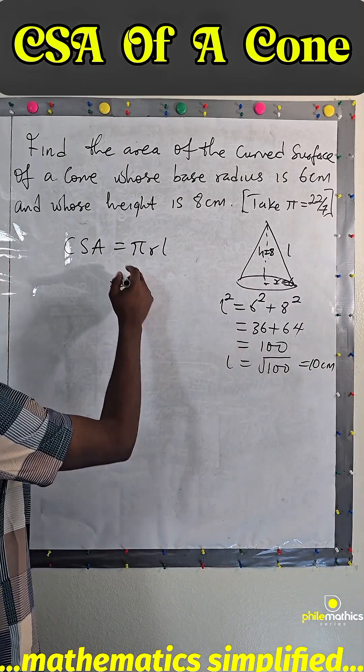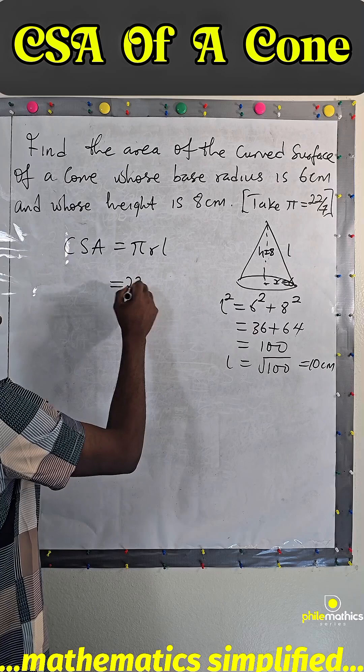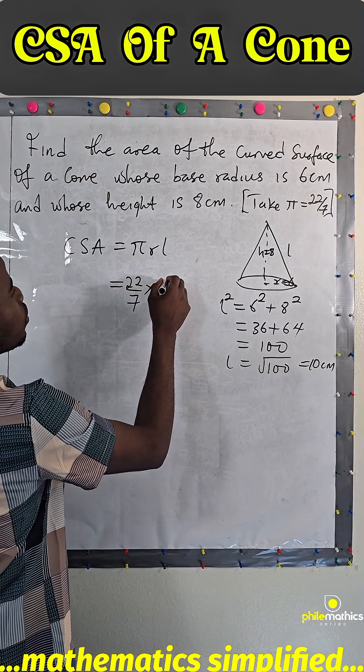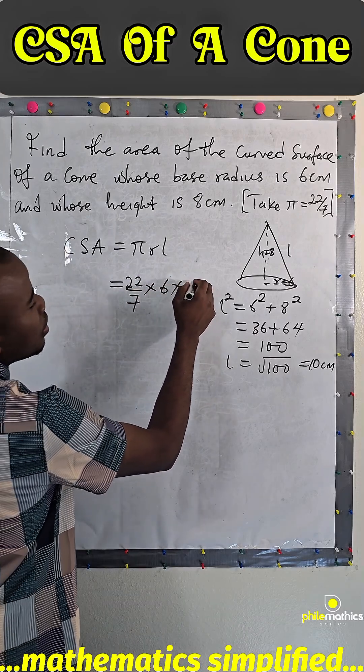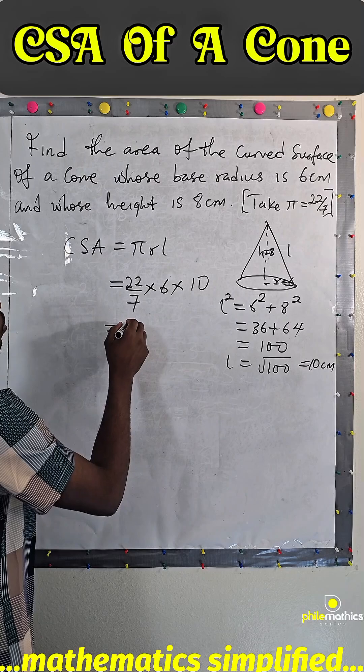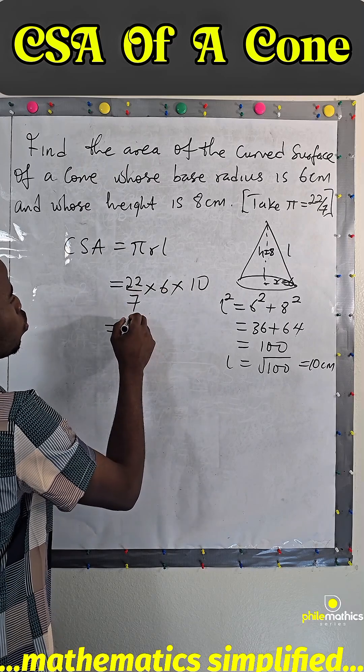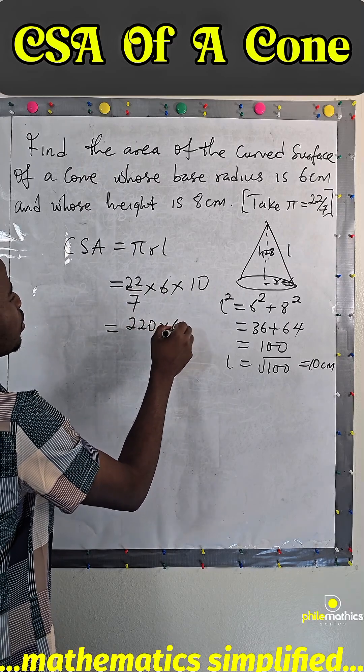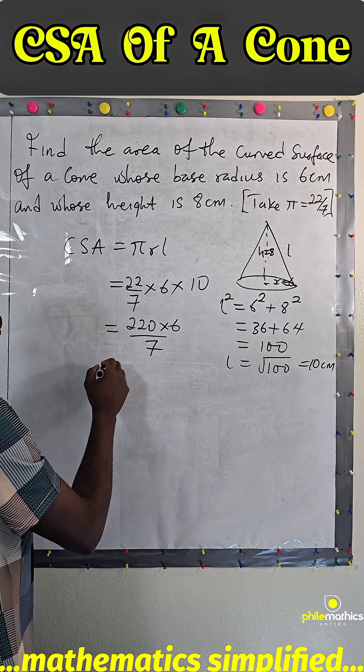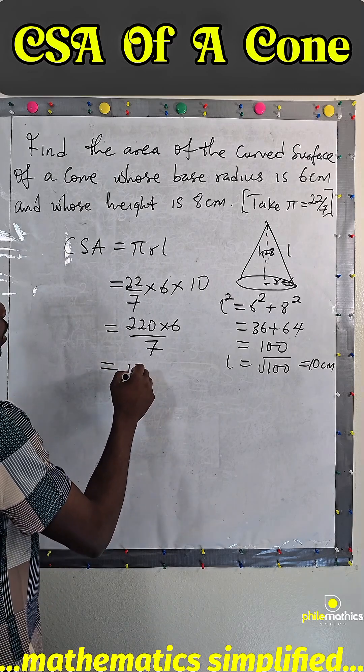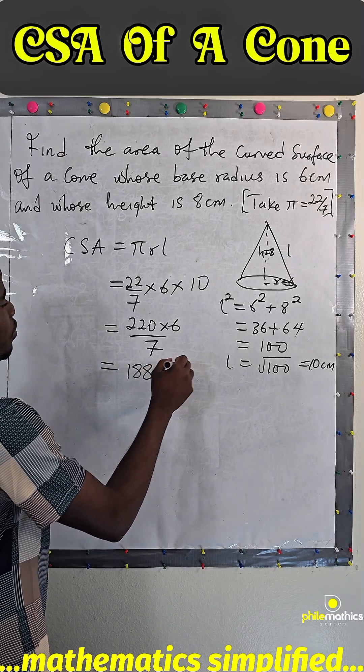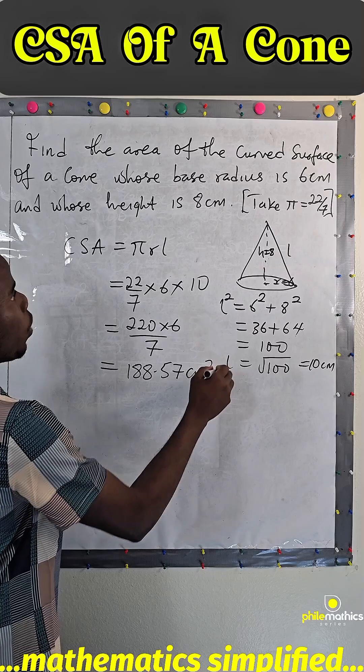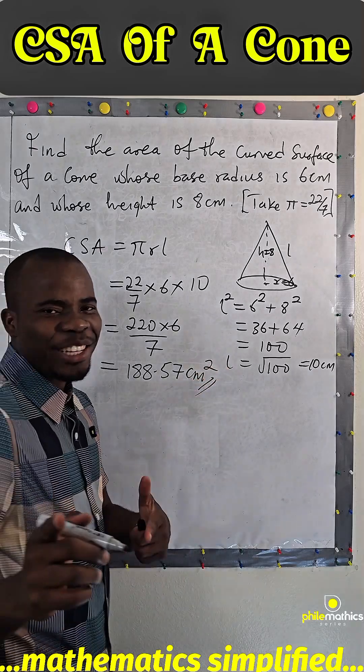So substituting this into our formula: our π is 22 over 7, our base radius is 6, and our length is 10. This is 220 times 6 over 7. If you use your calculator to do this, we will have 188.57 cm². Thank you for watching.